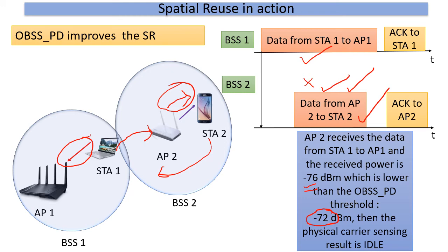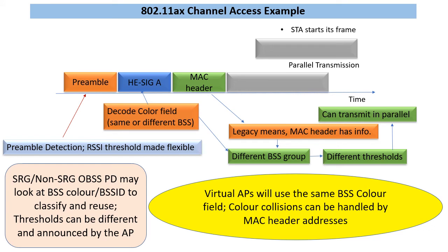To help achieve this, what are some new things from a standards perspective? The first thing is terminology like BSS color, which can be included in the PHY header of 11ax PPDUs for early detection. We also have ideas of spatial reuse groups, which can be used to configure different thresholds for different groups. The idea is that once you detect this early, you can continue your back-off and then transmit in parallel, with some safety applied.